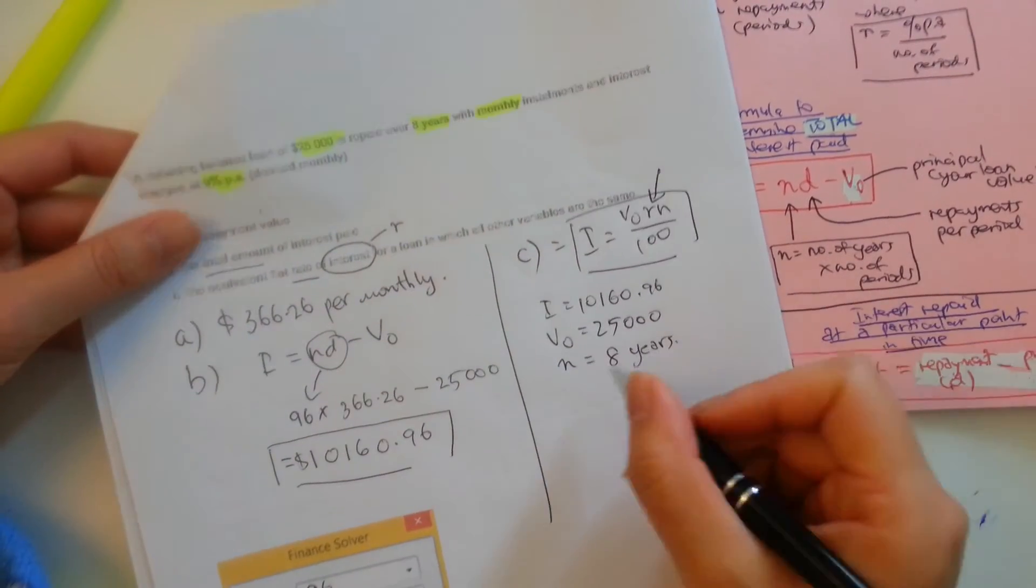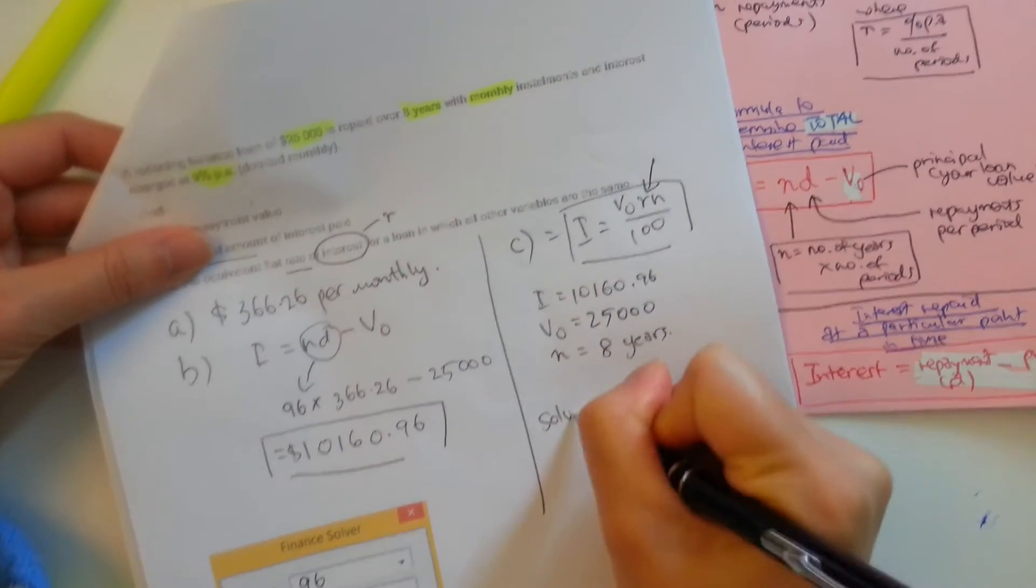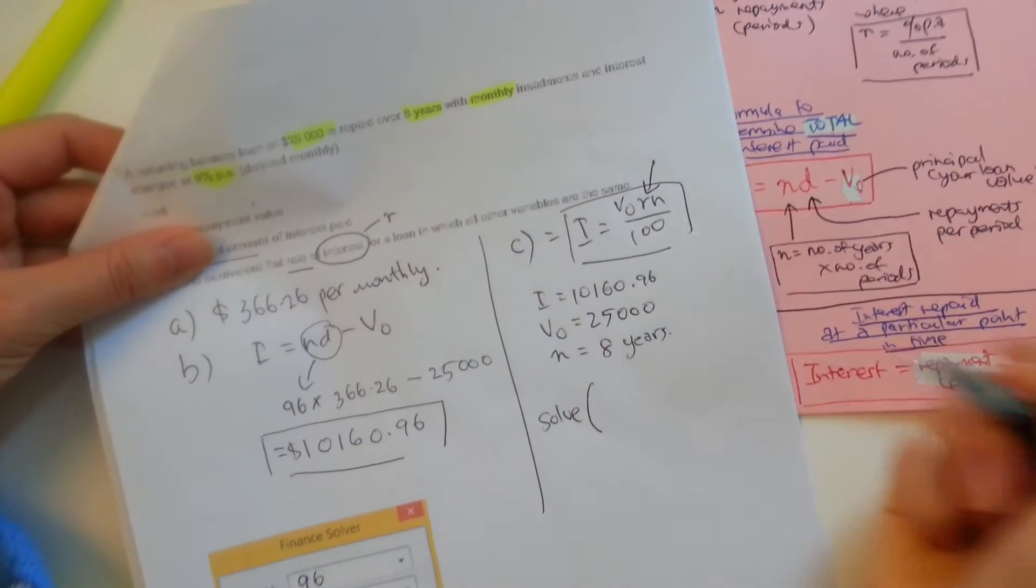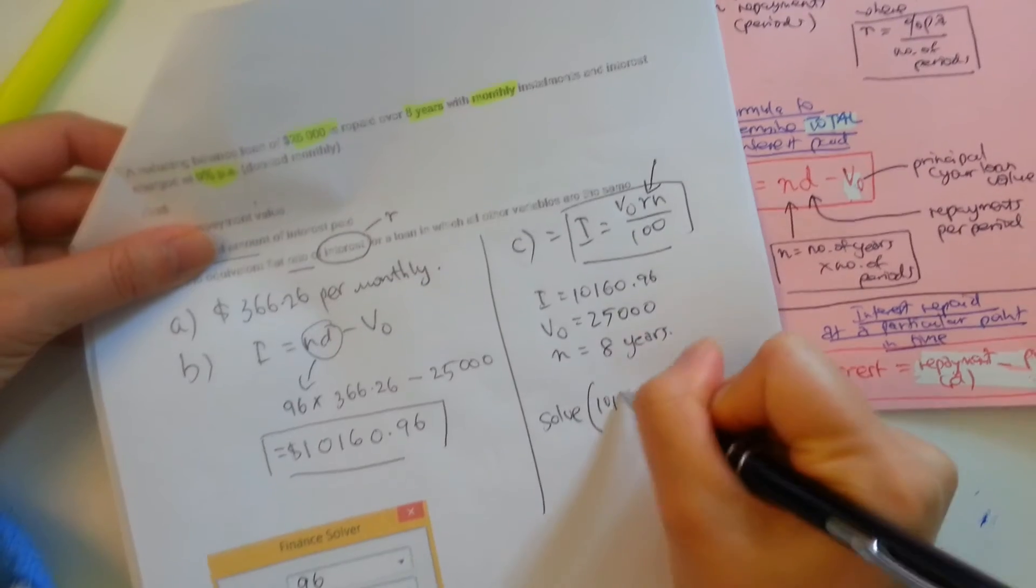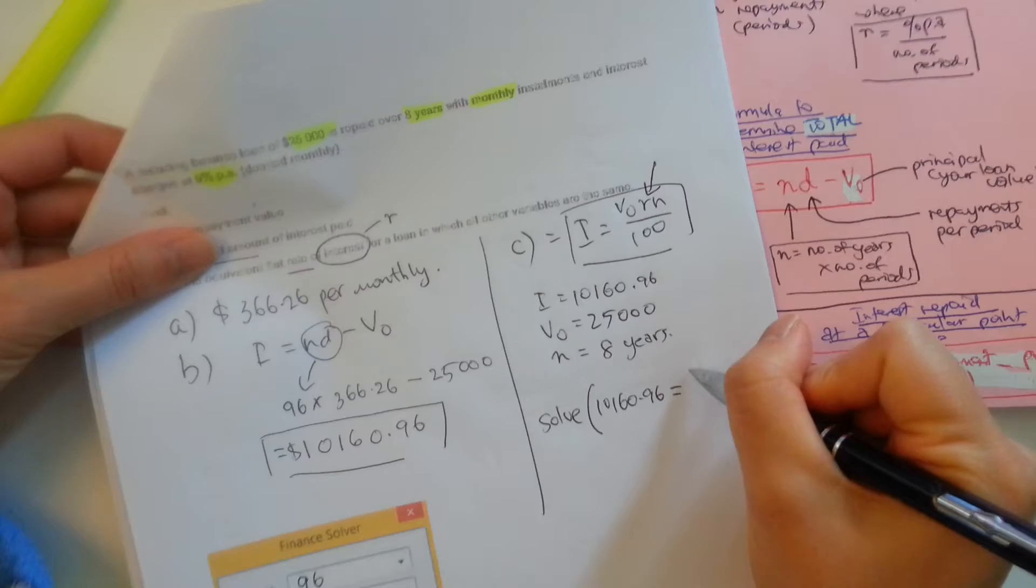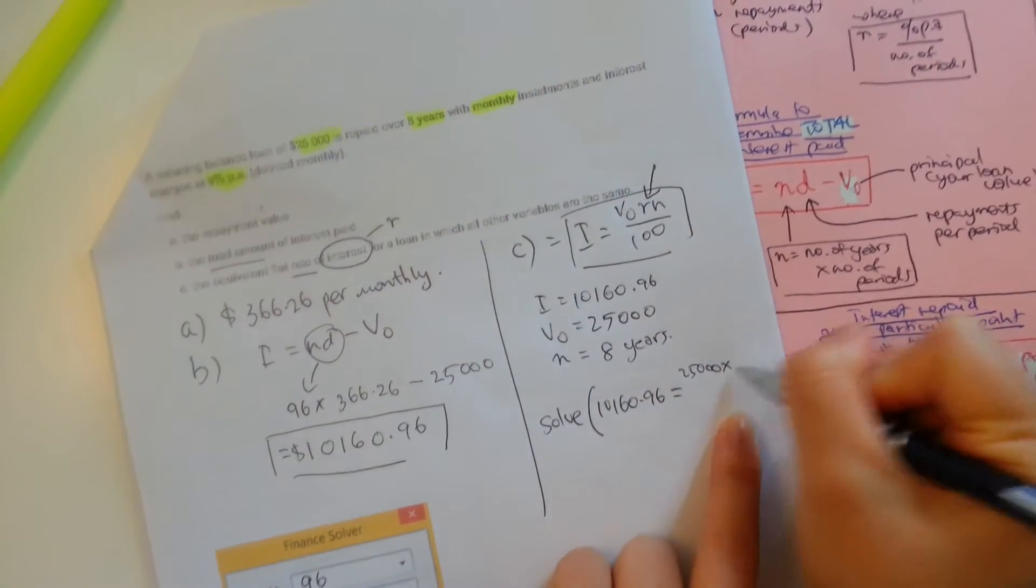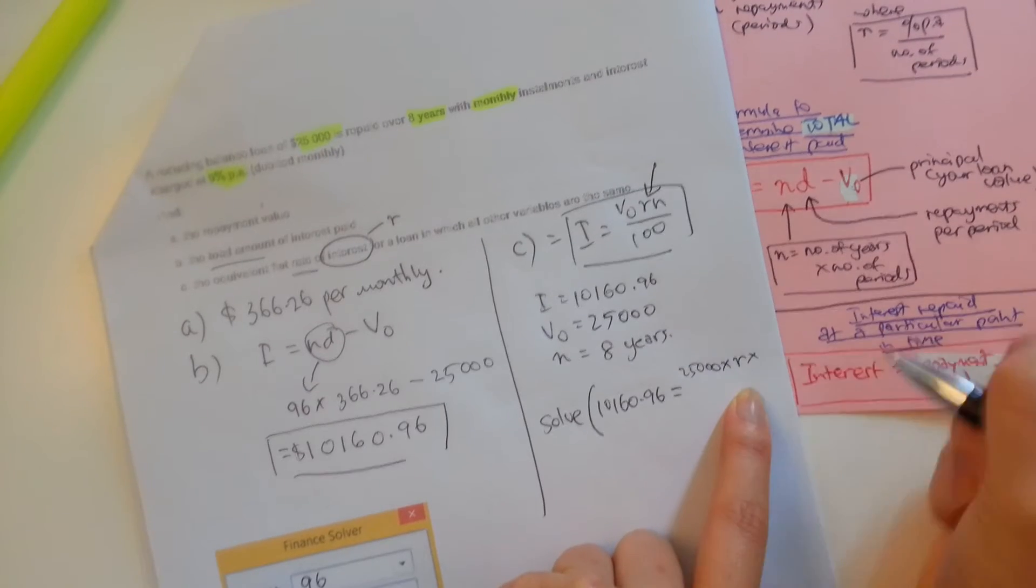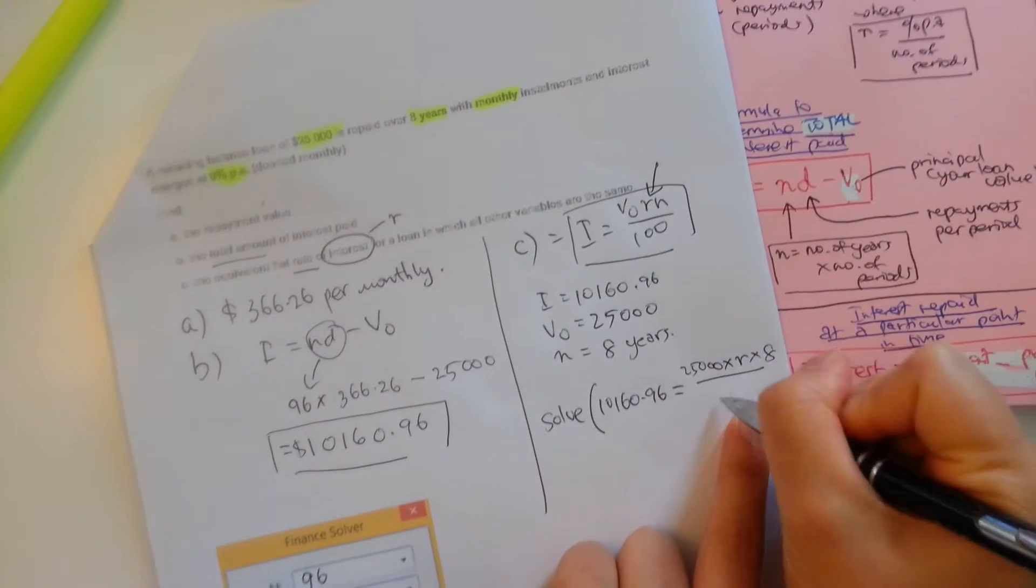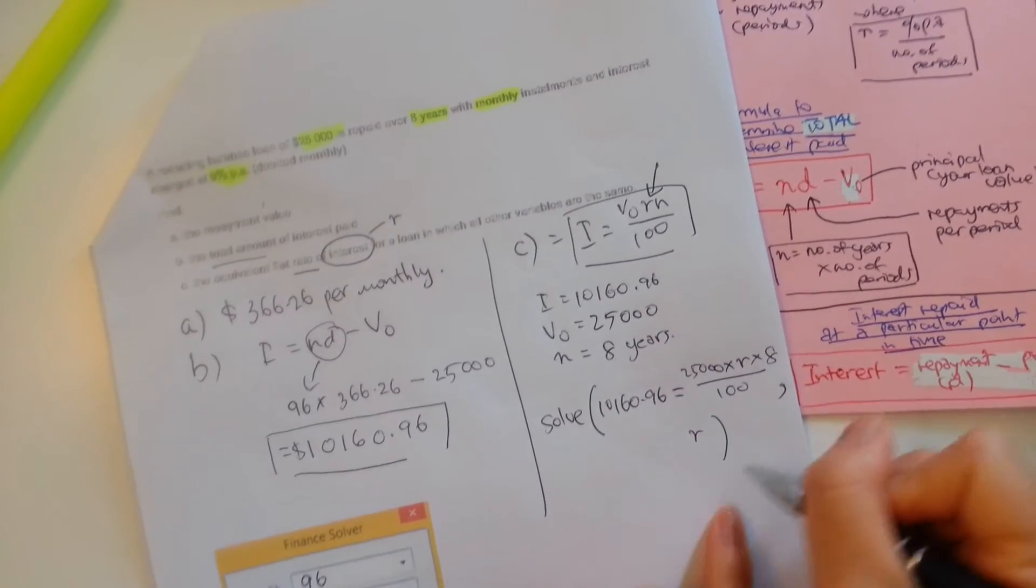And what you can do is you can use your Solve function on your calculator and you type in exactly this. 10,160.96 equals $25,000 times, you can put R or X, whatever you want, times 8 divided by 100, comma, R, and then you'd hit enter.